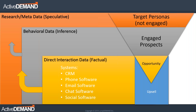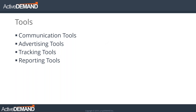We need tools — we can't do this as individuals and have it be scalable. The different types of tools we'll be using are communication tools, advertising tools, tracking tools, and reporting tools. And of course our brains as marketers — we're going to use our intelligence and experience to help with the process.